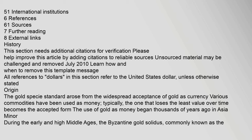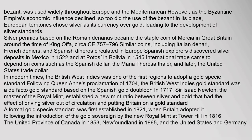The gold specie standard arose from the widespread acceptance of gold as currency. Various commodities have been used as money; typically the one that loses the least value over time becomes the accepted form. The use of gold as money began thousands of years ago in Asia Minor. During the early and high Middle Ages, the Byzantine gold solidus, commonly known as the Besant, was used widely throughout Europe and the Mediterranean. However, as the Byzantine Empire's economic influence declined, so too did the use of the Besant.